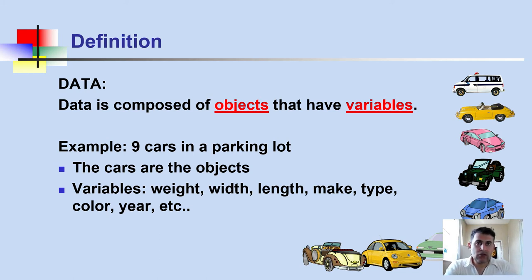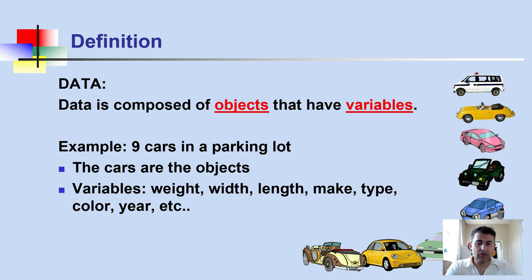Let's talk about data. First, what are objects? Objects can be people, cars, telephones, computers — everything is an object, meaning things we would like to say something about. These objects have variables. For instance, if you take a car as an object, the car has many variables: weight, length, make, type, color, number of cylinders, year, and owner.